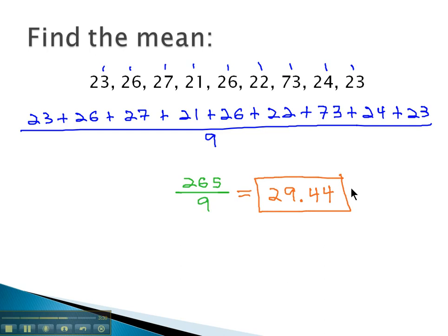What's interesting about this average or mean is 29.44 is higher than 23, higher than 26, higher than 27, higher than 21, higher than 26, higher than 22, higher than 24, and higher than 23. It's higher than all of the values except for 1 because that one value is actually not really close to the others.